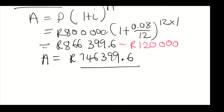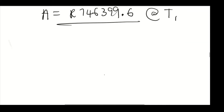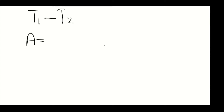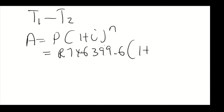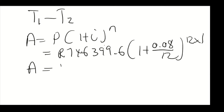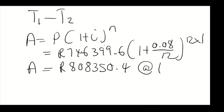We are looking for the amount at t2, so from t1 to t2 we again apply A = P(1 + i)^n. P is now 746,399.6, the interest rate remains 0.08 over 12, and n is 12 times 1 since from t1 to t2 is one year. The final answer is 808,350.48 at t2.